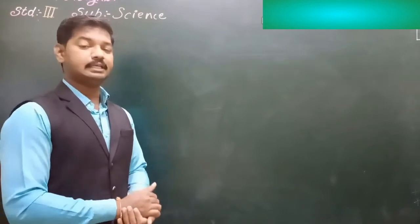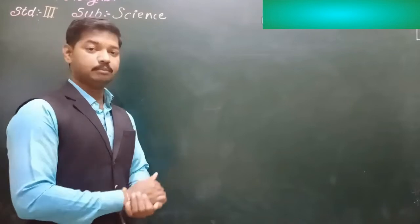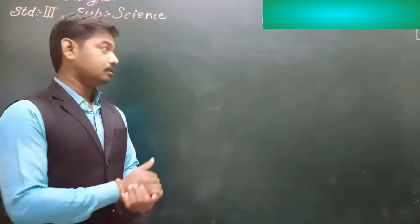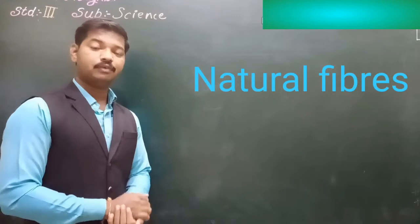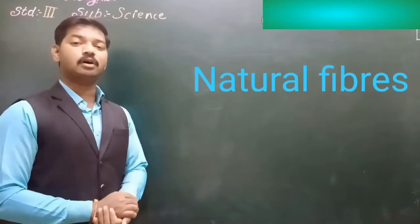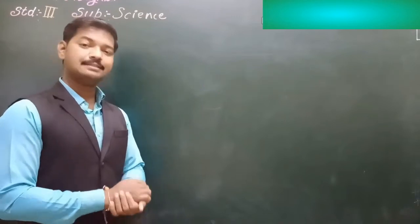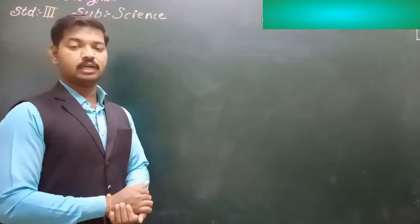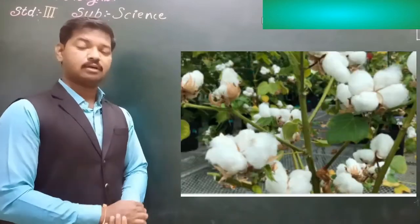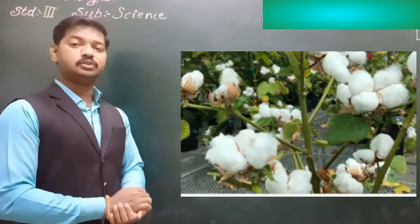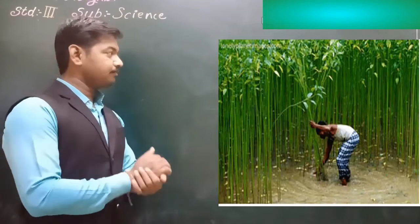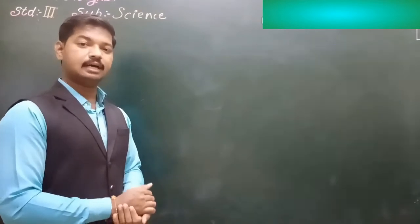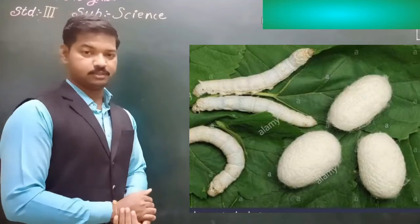Synthetic means it is human-made fiber. Now first we learn about natural fibers. Fibers which are obtained from plants or animals are known as natural fibers. Cotton and jute are plant fibers. Wool and silk are animal fibers.